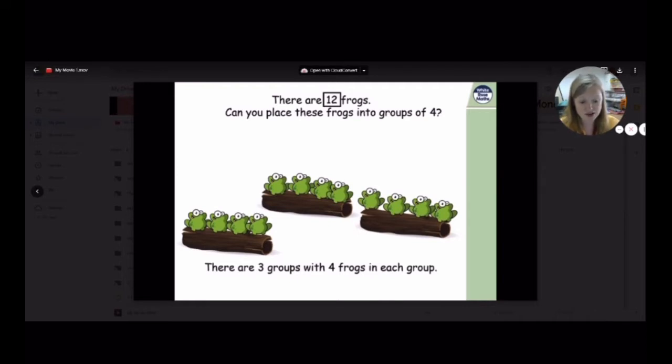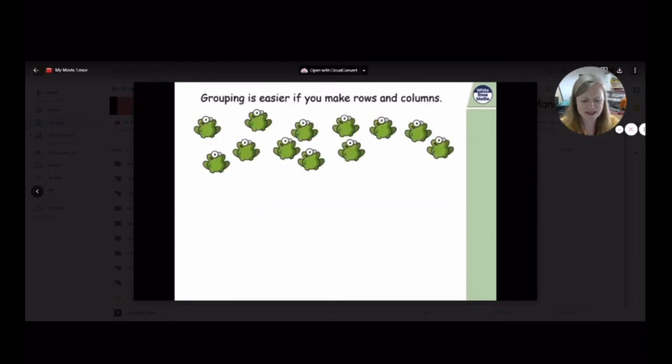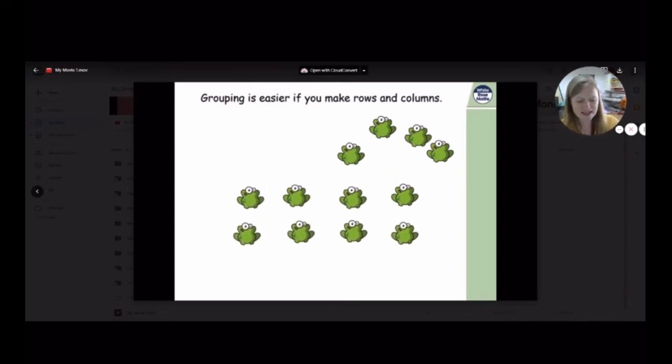Can you see my three groups and four frogs in each group? Putting frogs on logs is fun, but grouping is easier if we can make rows and columns. Off you go, frogs. Get into your rows and columns. I think they're ignoring me. Frogs, can you get into rows and columns, please? Oh, lovely. Yes, well done. And perfect. Rows and columns.